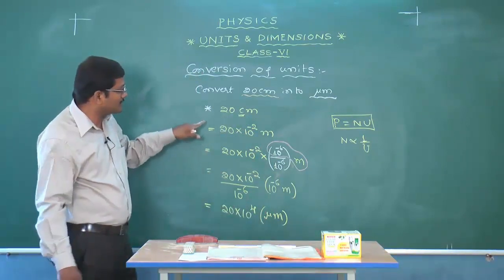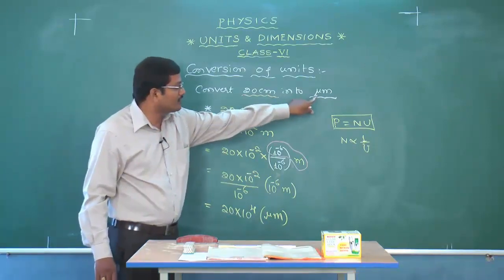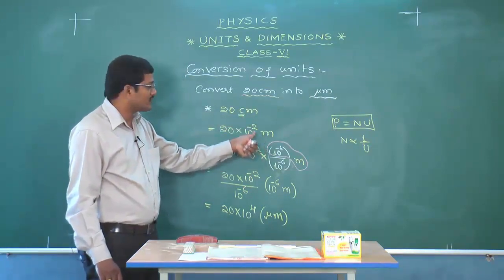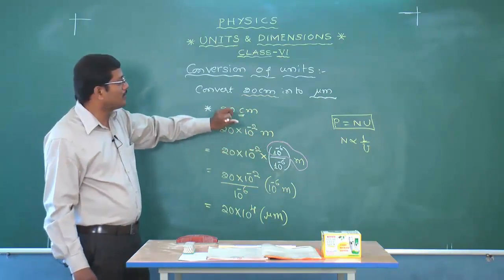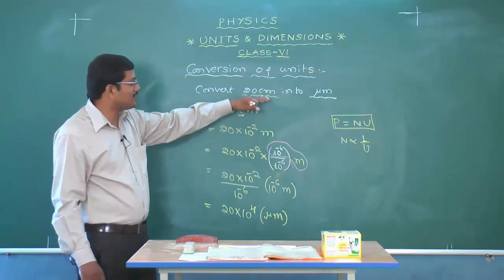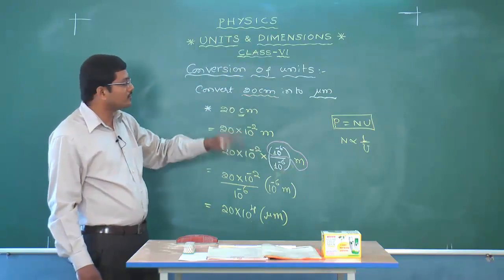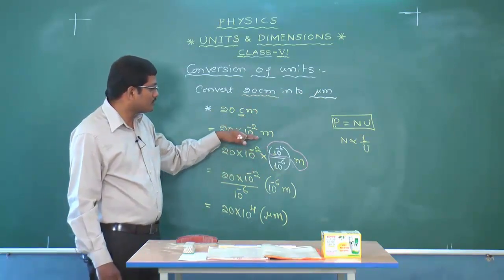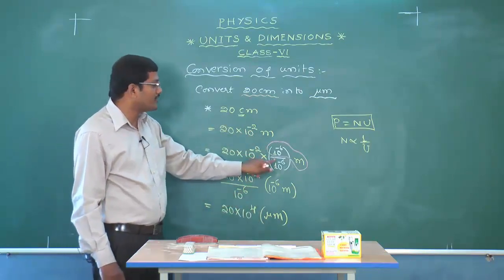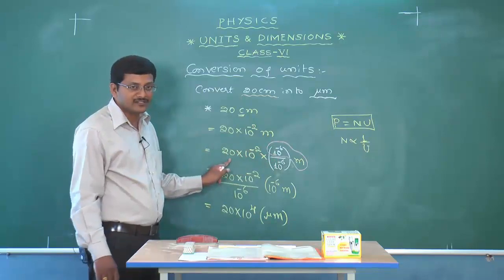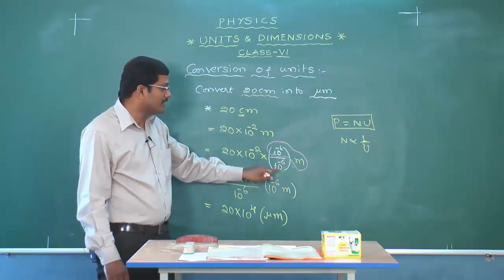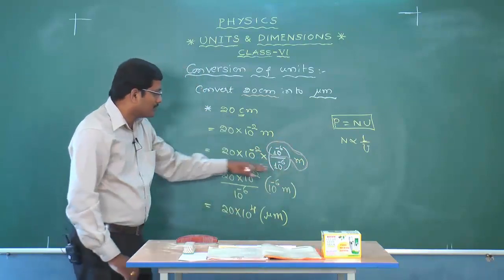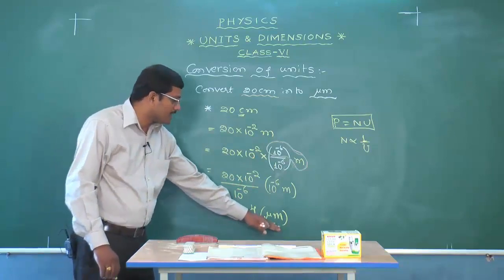So this is the way of solving. Once again: 20 centimeters is given; substitute centi with 10 to the power of minus 2, writing it in meters. First, always convert to the base unit — meters. Then to change from meters to micrometers, introduce the fraction 10 to the power of minus 6 over 10 to the power of minus 6, which equals 1. Rearrange, and you will get the value in micrometers.